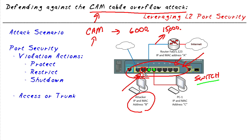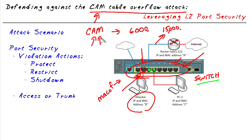This attack is carried out with tools like MacOff, which sends thousands and thousands of frames into the network with fictitious, randomly made-up source MAC addresses, tricking the switch into learning thousands of MAC addresses on a single port and overflowing the capacity of the CAM table.